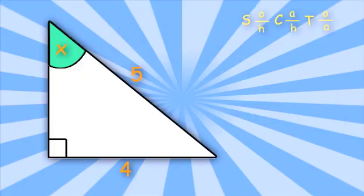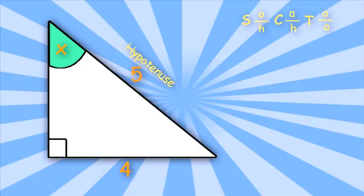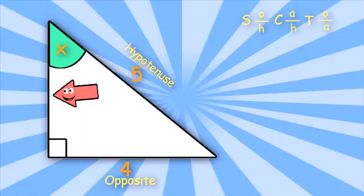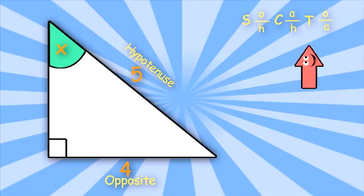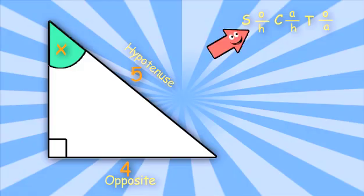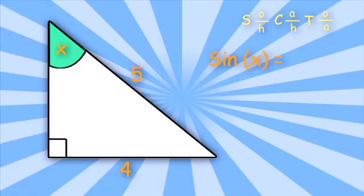We are ready to do some math. In this problem, we are asked to find the measure of the green angle. It's a good idea to start by identifying the three sides first. I like to start by finding the hypotenuse since it is the side that never changes. I'll look across the 90 degree angle — 5 is the hypotenuse. Now in relationship to the green angle, 4 is the side opposite and this side is the side adjacent. So we are given opposite over hypotenuse, which means I'll use sine of x. Sine of x equals 4 over 5, opposite over hypotenuse.